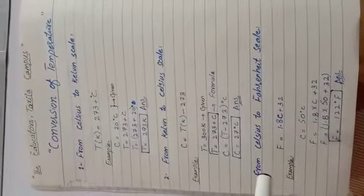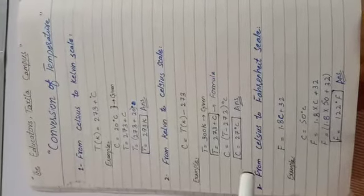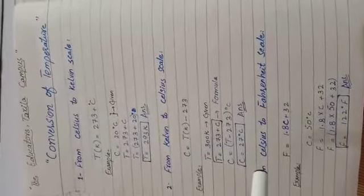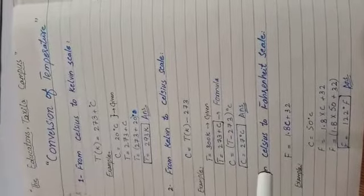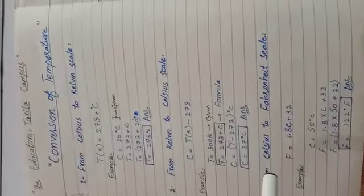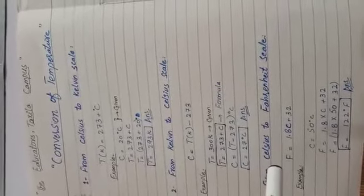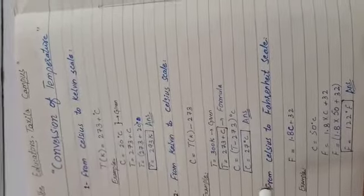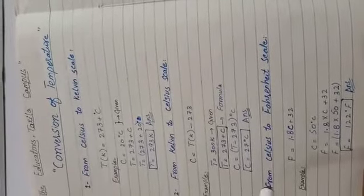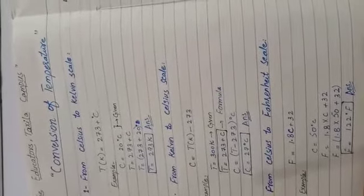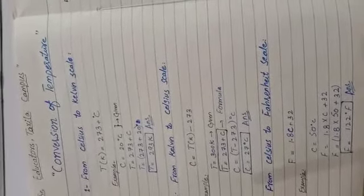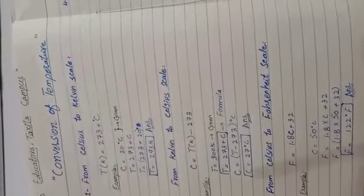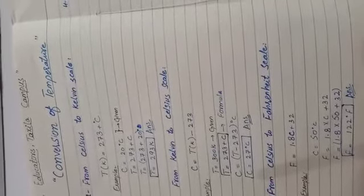Next, we look at Celsius to Fahrenheit conversion. When we have 100 divisions in the Celsius scale, they are equal to 180 divisions in the Fahrenheit scale. This means that one division in Celsius is equal to 1.8 divisions in Fahrenheit.